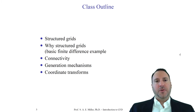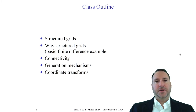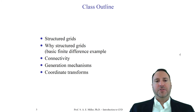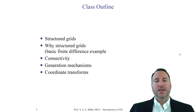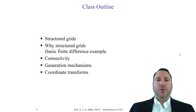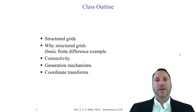Today we'll be talking about structured grids as opposed to unstructured grids. We'll discuss why we use structured grids and a basic finite difference example for a boundary layer flow. We'll also note that connectivity is implied in these grids, and briefly cover generation mechanisms. Most importantly, we'll be talking about the coordinate transforms of structured grids — this is not trivial, and involves the so-called Jacobian.